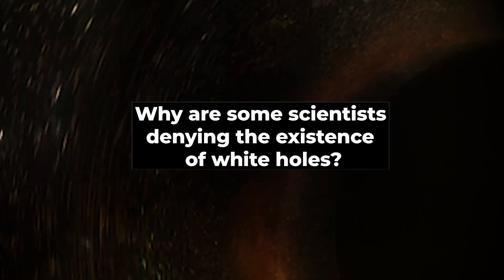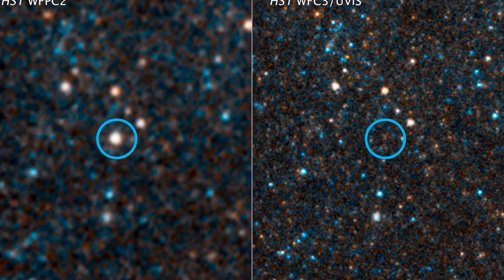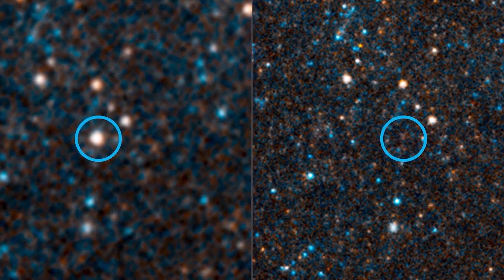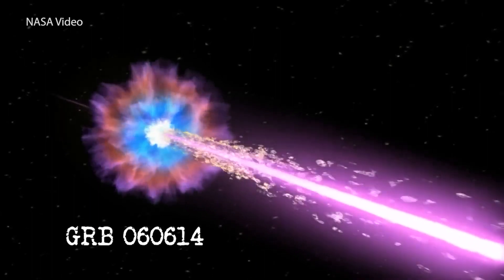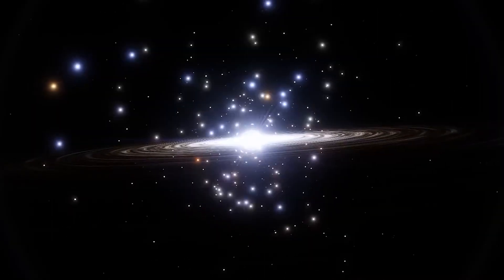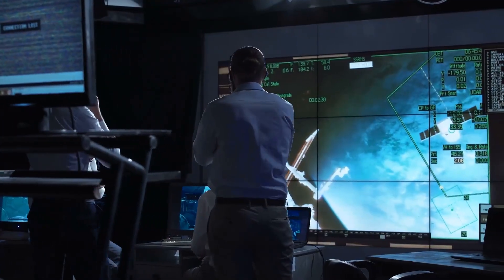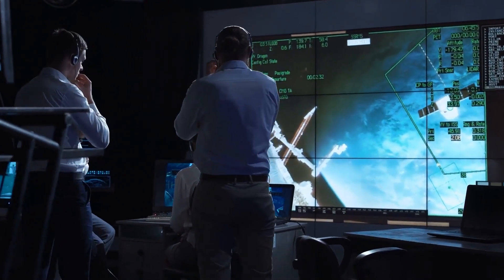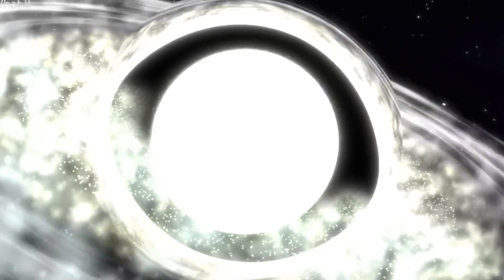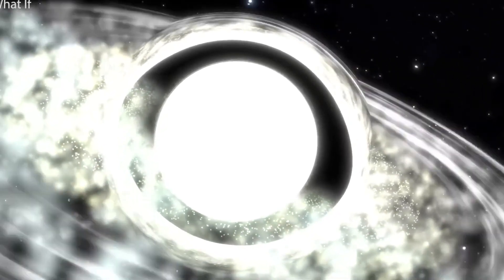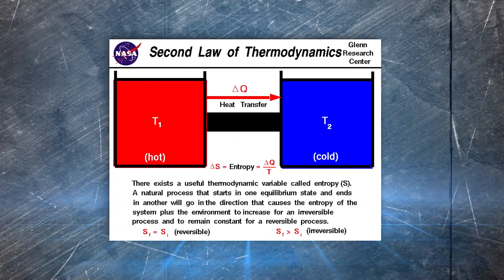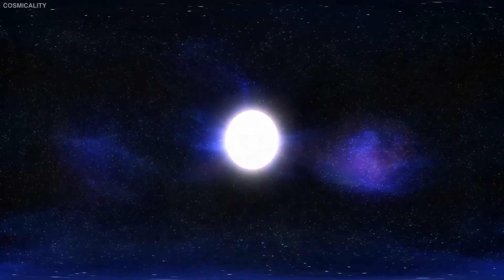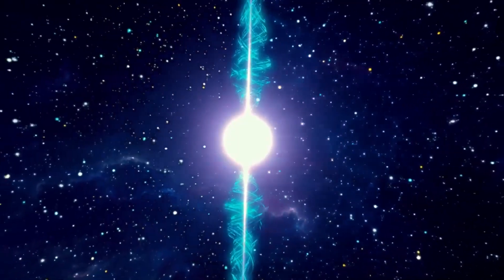Why are some scientists denying the existence of white holes? Lack of observational evidence is one of the main reasons why some scientists are denying the existence of white holes. Though the possibility of GRB-060614 being a white hole is high, at the end of the day, it's just a hypothesis. Furthermore, another major reason why scientists don't believe in the practical existence of a white hole is the laws of thermodynamics. Apparently, the phenomenon of the white hole denies the second law of thermodynamics. The second law of thermodynamics states that the entropy of a universe can either remain the same or increase.